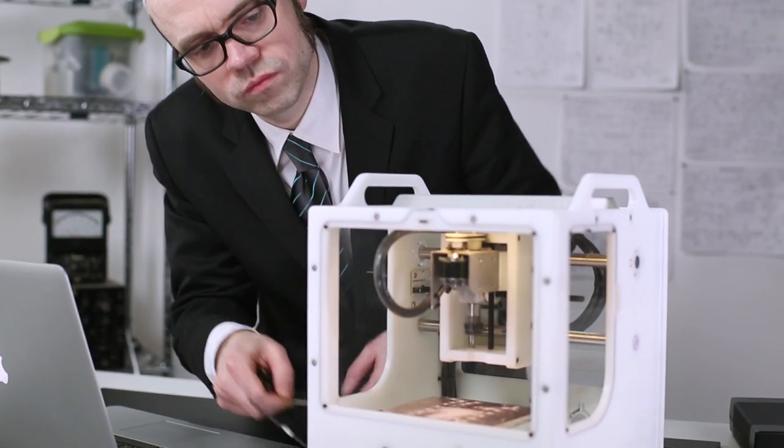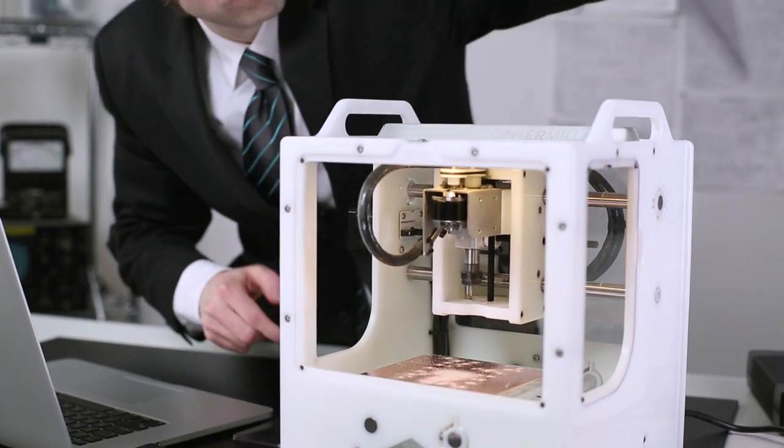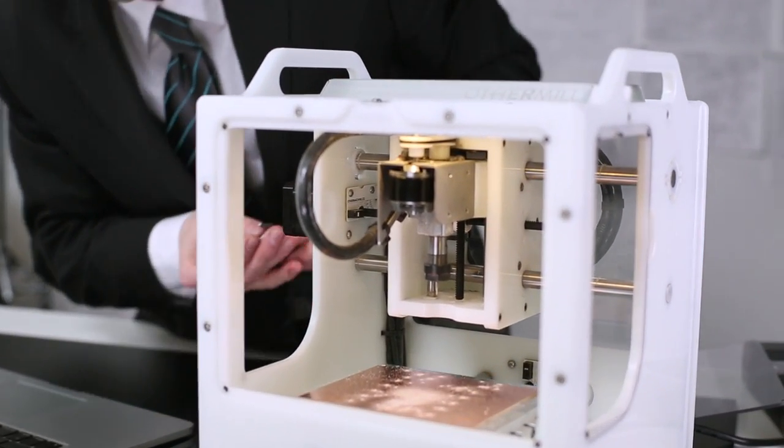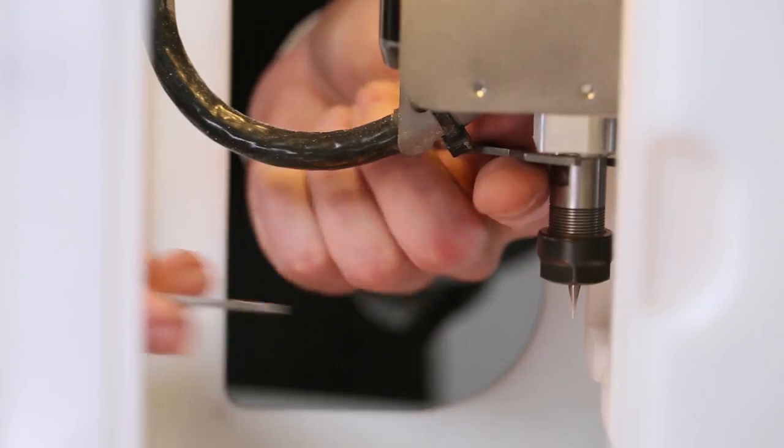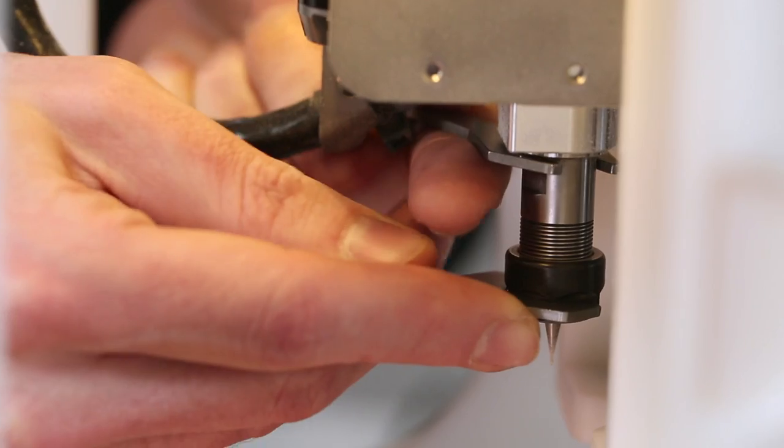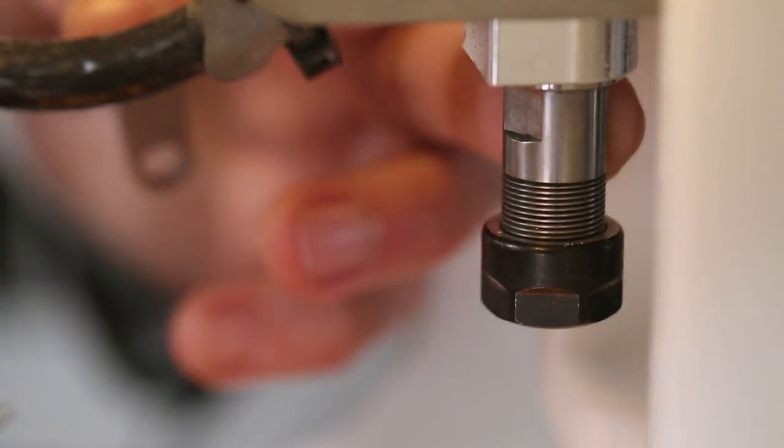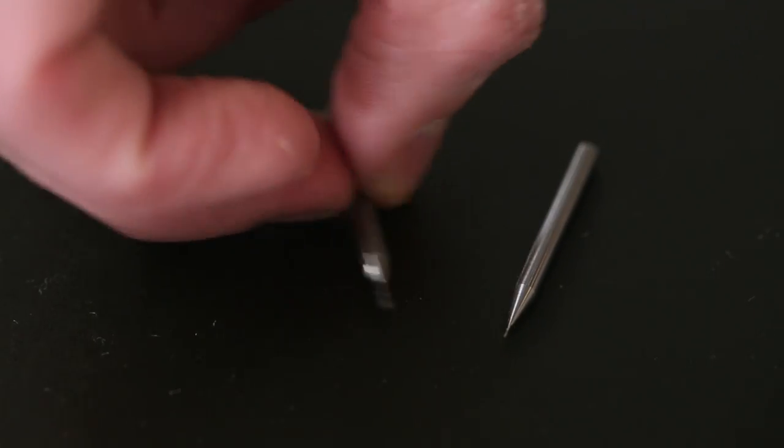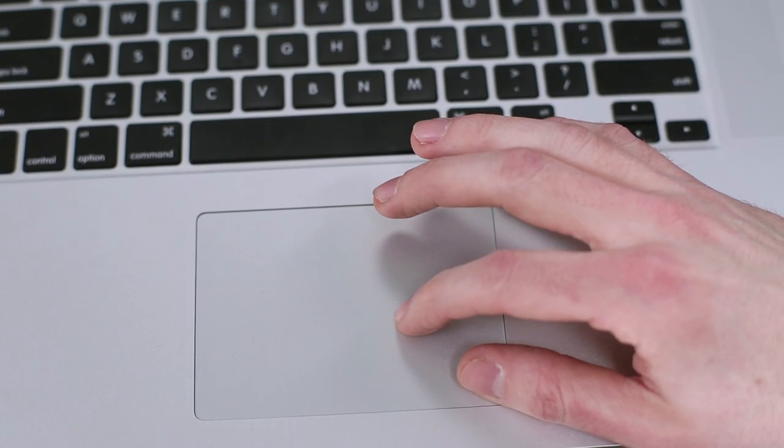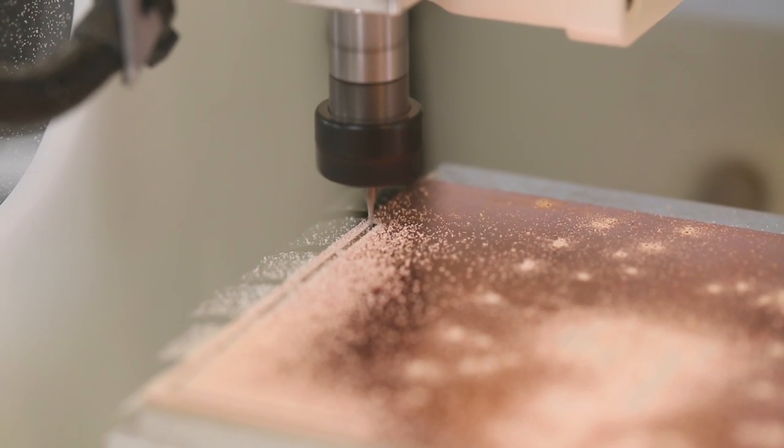Once the mill is done using the 1/64 inch end mill, it will automatically pause and prompt me to install the 1/32nd inch. Since this is a relatively large board, the entire process takes a little under two hours to complete.